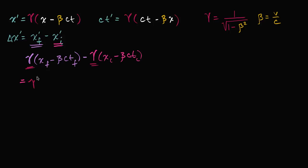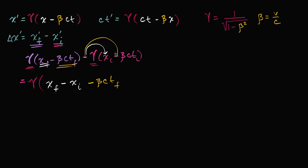If we factor out the gamma, we're going to get gamma times x final minus x initial. And then if we distribute this negative sign, we're going to have negative beta times ct final, and then plus beta times ct initial. And x final minus x initial is just going to be change in x.